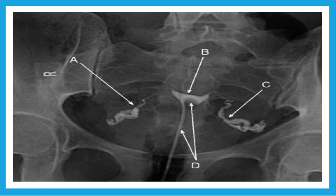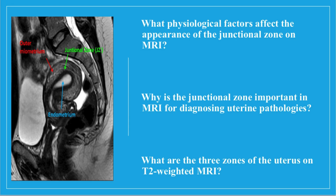MRI is the modality of choice for pelvic benign and malignant focal lesions. It is of high resolution, gives us clear zonal anatomy, and with enhancement of the pattern gives us a good idea of the contents of lesions — which could be blood, calcification, fat, etc. It also allows evaluation of other pelvic organs, soft tissues, and bones.